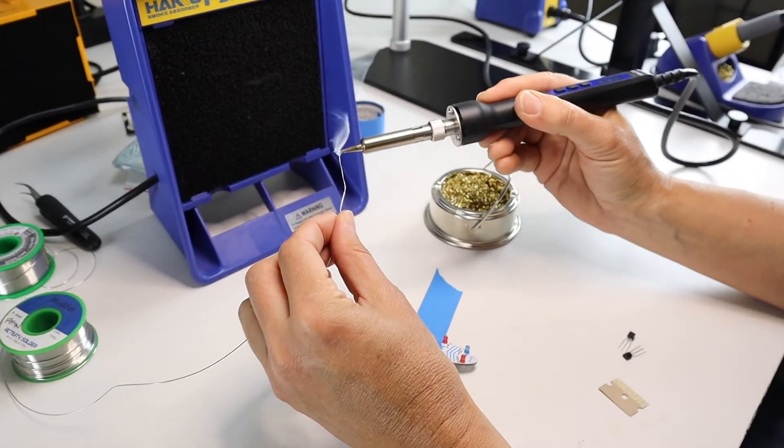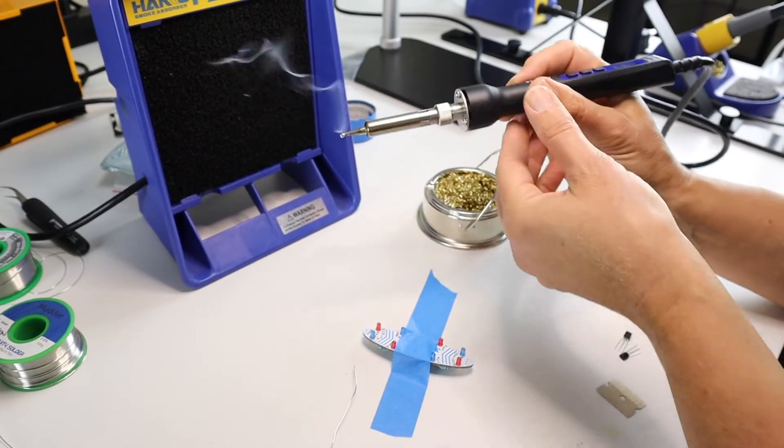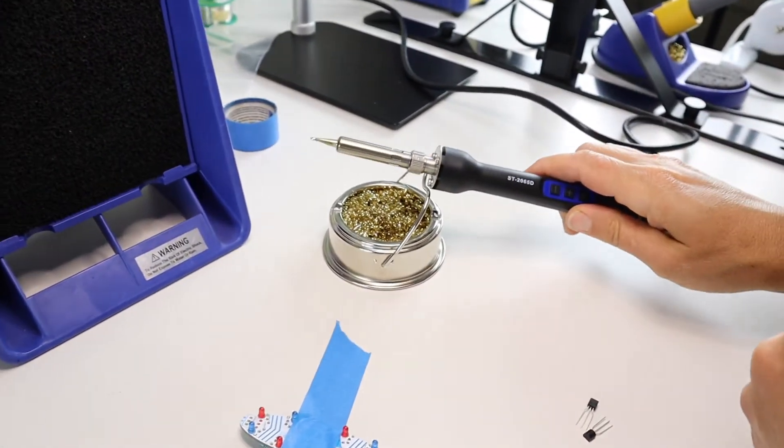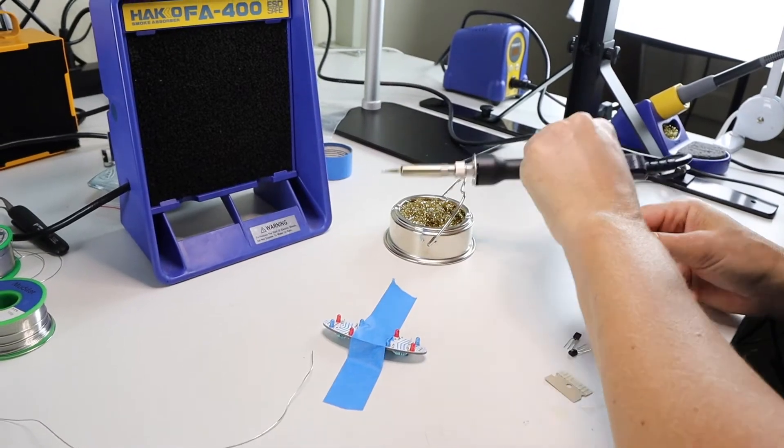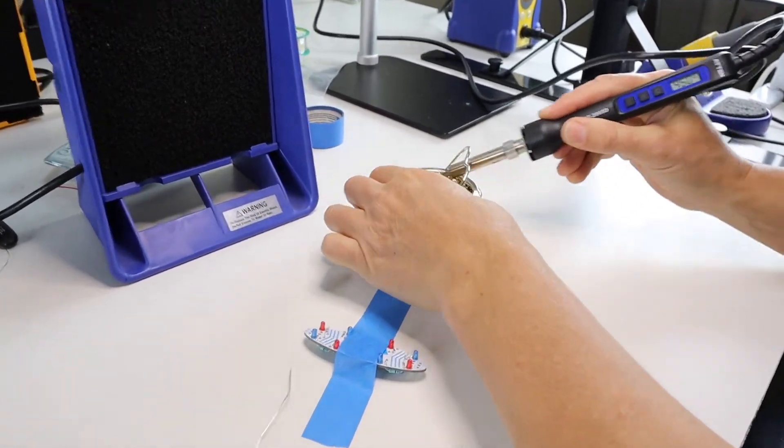Before putting your iron down, coat the tip with a blob of solder. This protects it from oxidation and will help it last longer. When you pick up your iron again, wipe off the tip to start with it clean.